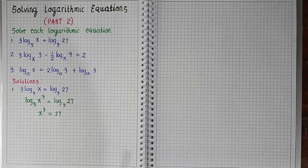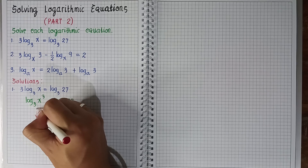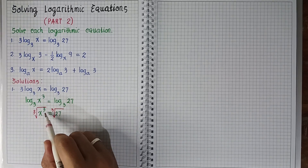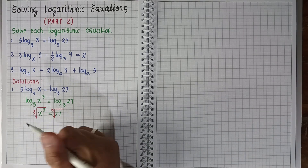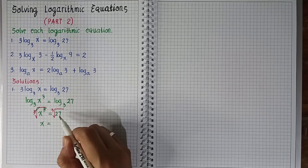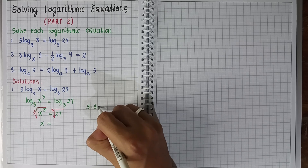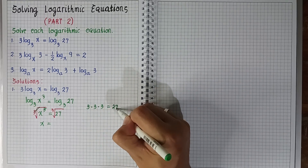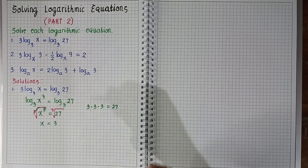Since we are looking for the value of x, we take the cube root of both sides — because the exponent is 3. If it were squared, we'd take the square root of both sides. Taking the cube root cancels the exponent, so x is equal to the cube root of 27, which is 3. Because 3 times 3 times 3: 3 times 3 is 9, times 3 is equal to 27. So the cube root of 27 is 3, and x equals 3.